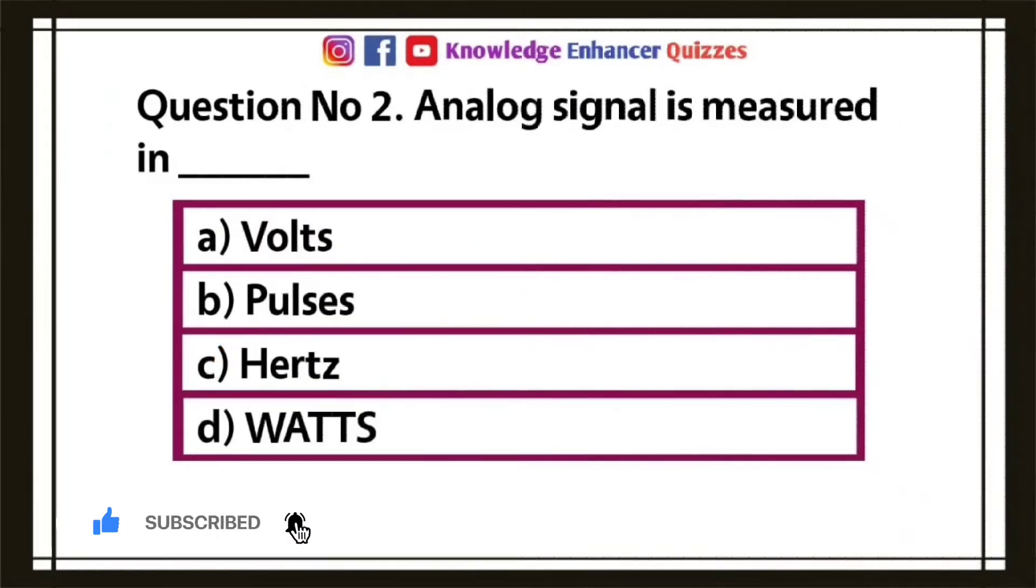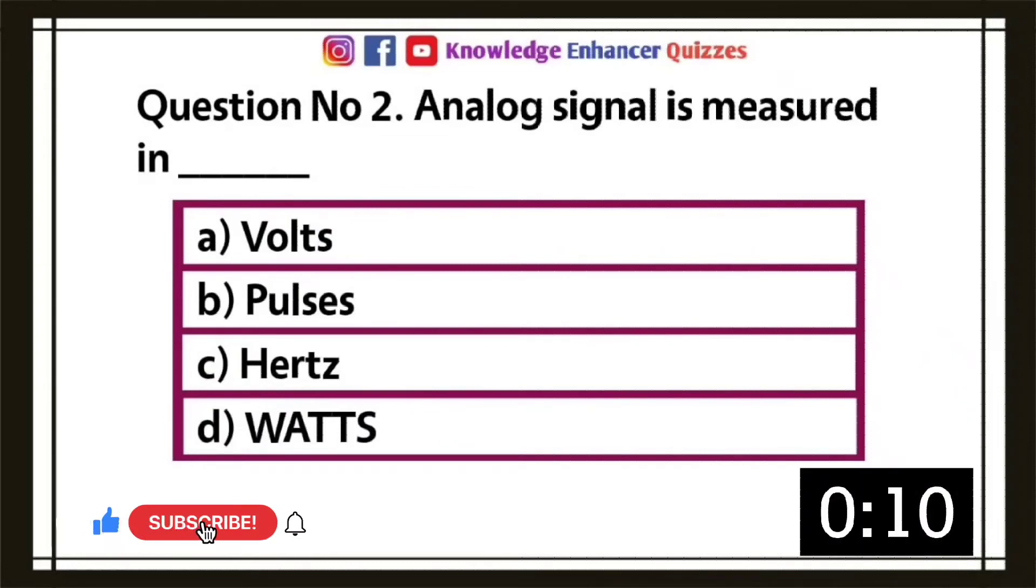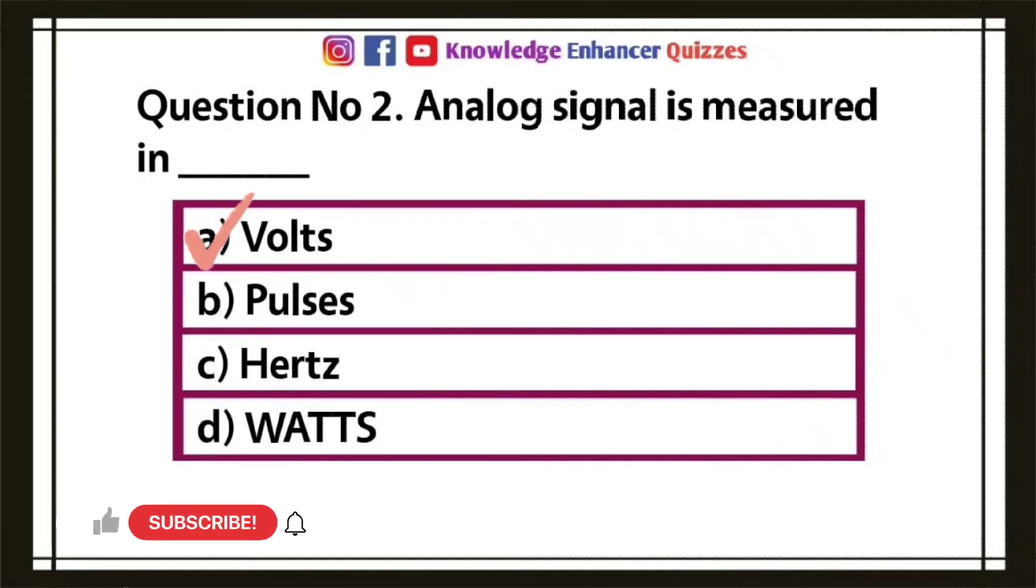Question number two, analog signal is measured in: A, volts; B, pulses; C, hertz; D, watts. Option A is the right answer.